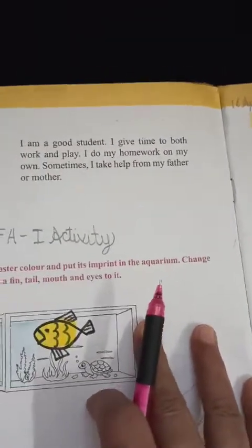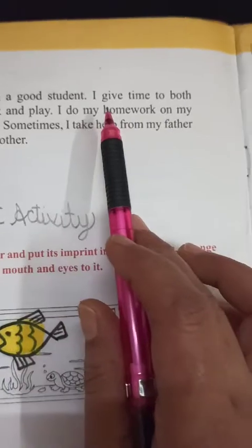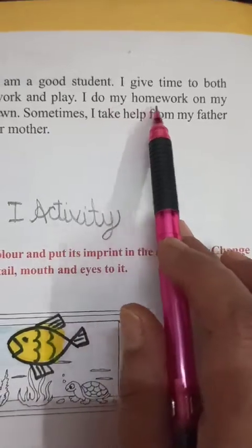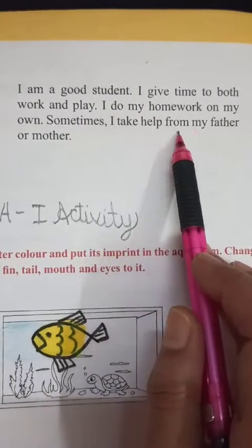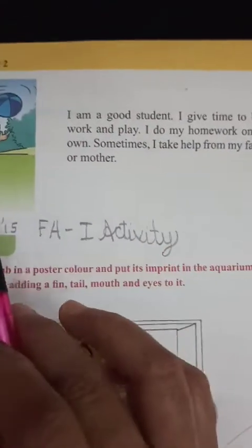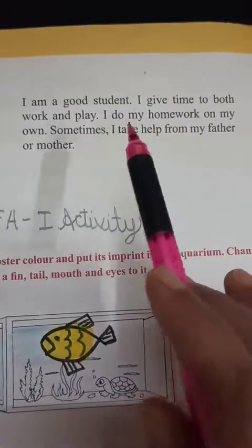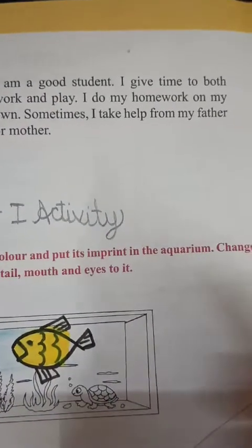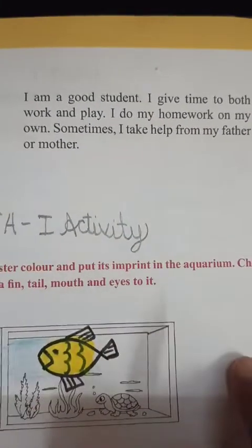Next on this page, see this boy is playing. And here they have written: 'I am a good student. I give time to both work and play. I do my homework on my own. Sometimes I take help from my father or mother.' In this paragraph, this student is writing about himself. As you also, you are a good student and you can write about yourself. 'I am a good student and I give time both to work and play' — means I like to play as well as I like to do homework also.